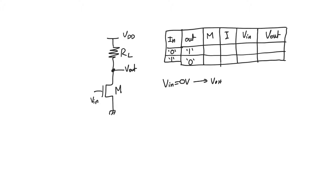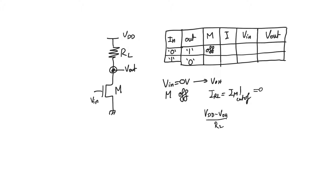With V_input equals zero volts, VGS for transistor M is zero, so transistor M is definitely cut off and the region of operation is off. When M is off, we have only one equation: KCL at the output node, giving I_RL equals I_M. With I_M cut off and equal to zero, we get (VDD − V_out_high) / RL = 0, giving us V_output_high equals VDD. The transistor creates an open circuit on the load, which pulls the output node to the supply. The current flowing through the circuit is zero.